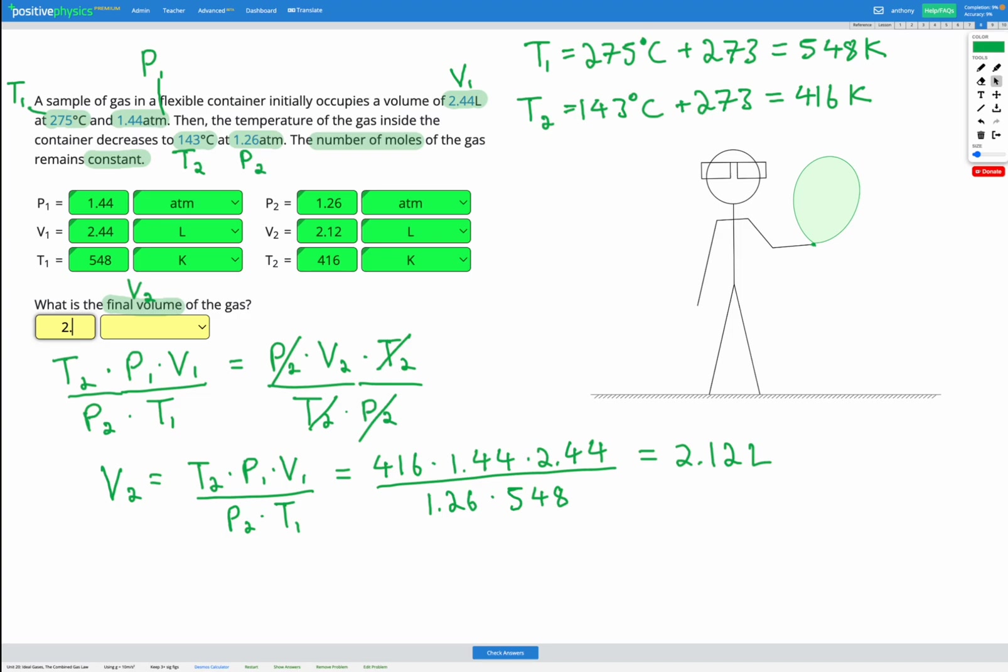So we've succeeded in finding our final volume. Remember, temperature must be in Kelvin for us to use this equation. So always convert into Kelvin if you're given a temperature in degree C before you put them into your work table or into your equation.